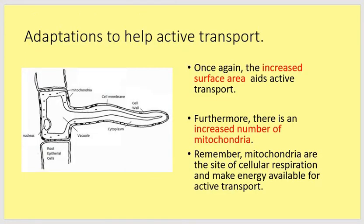Now we look at another diagram of a root hair cell and think about how its adaptations relate to active transport. Again, the large surface area aids active transport because there is more space for it to occur. The increased number of mitochondria is important — mitochondria are the site of cellular respiration and make energy available for active transport. More mitochondria are also found in animal cells such as muscle cells and sperm cells, both of which require extra energy provided through cellular respiration in the mitochondria.